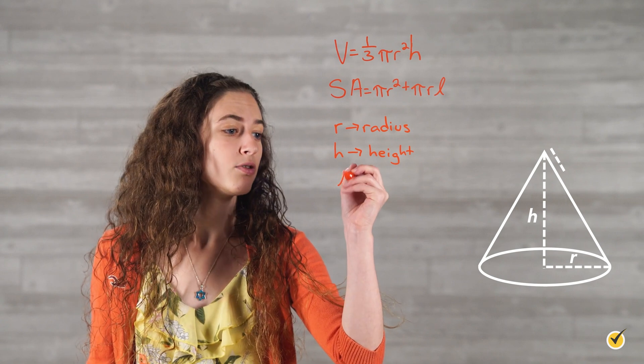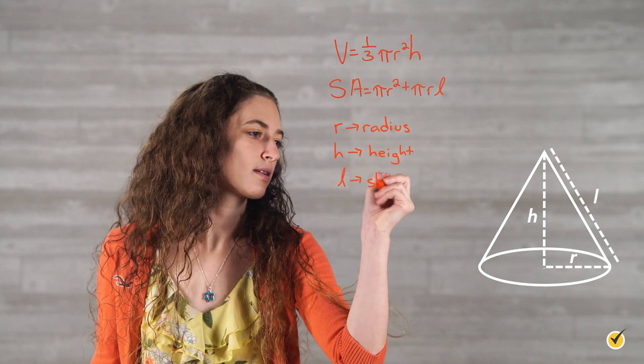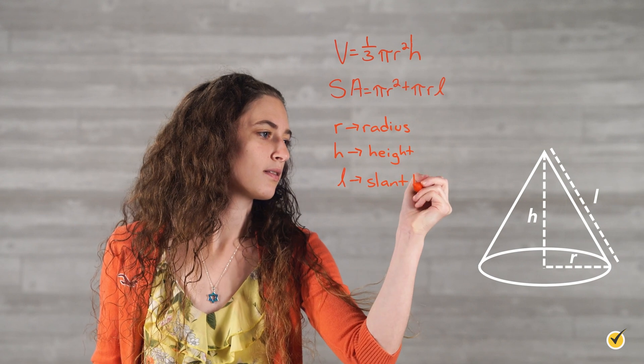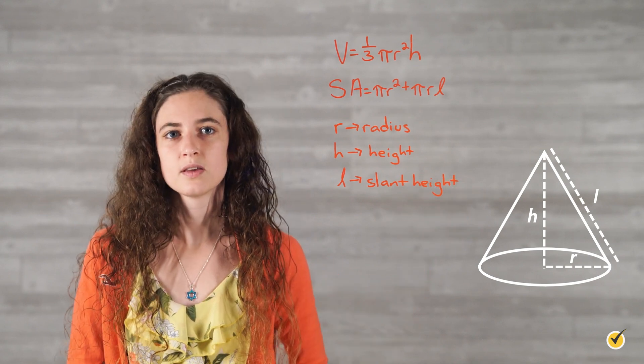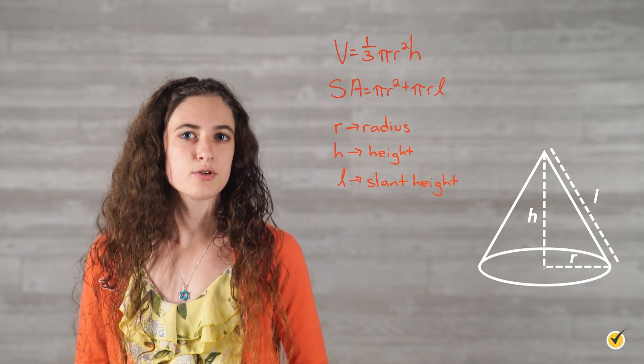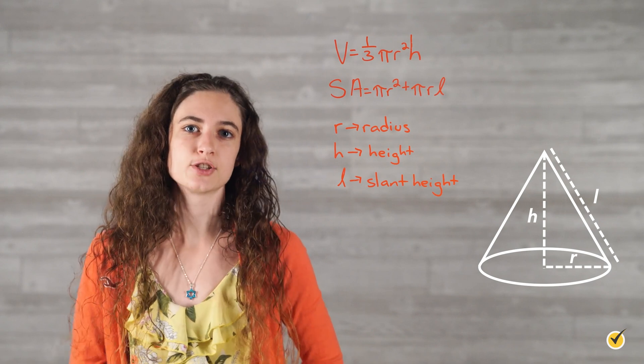Finally, the l represents the slant height. Think of this as a straight line that runs from the tip of the cone to the edge of its base.